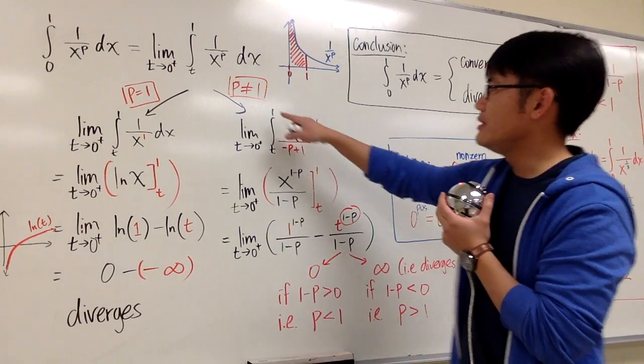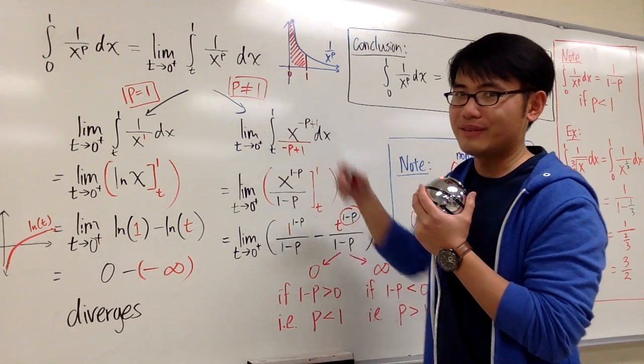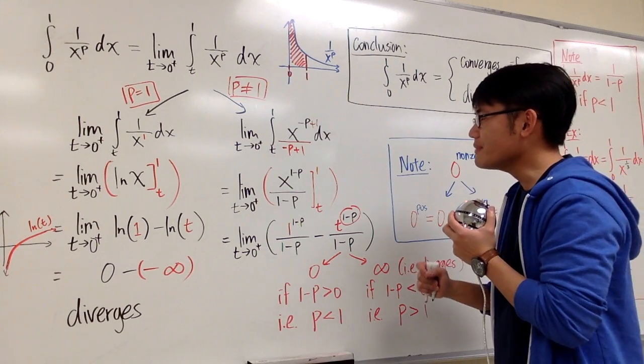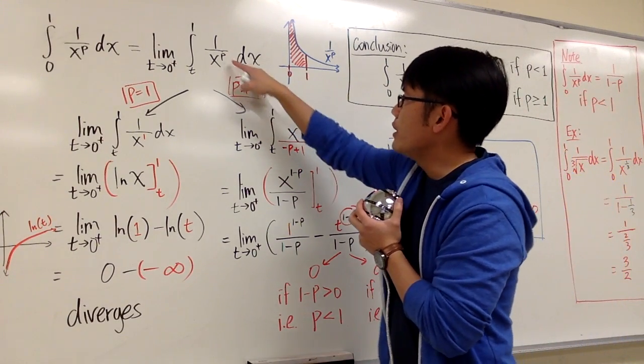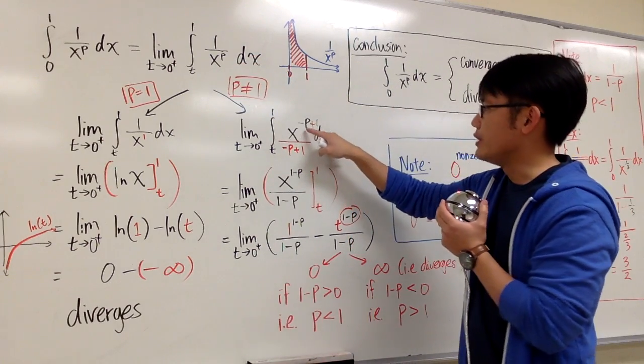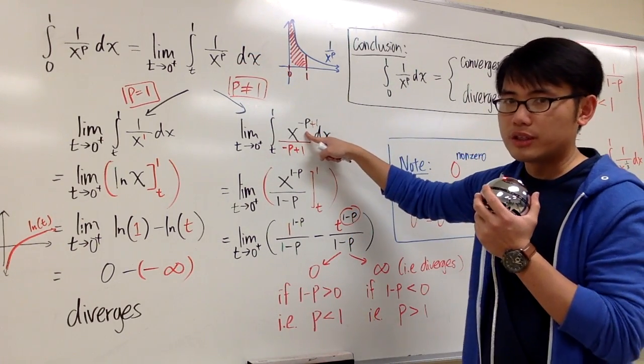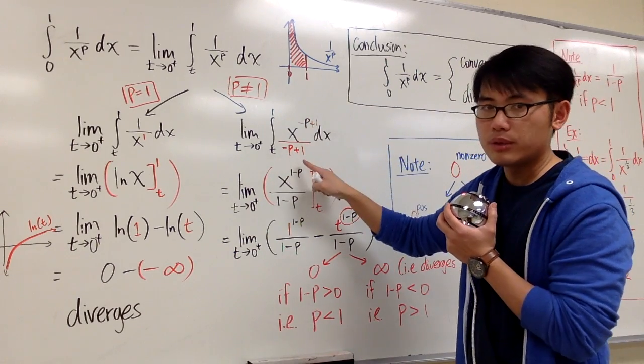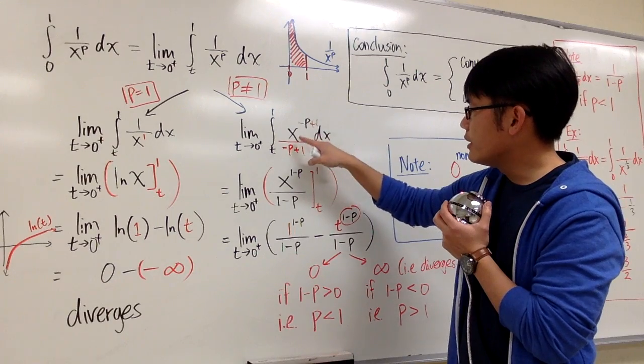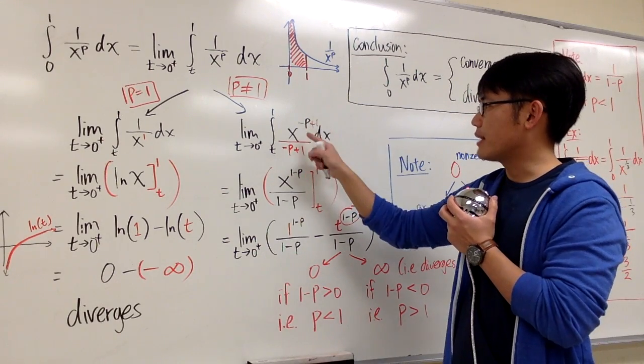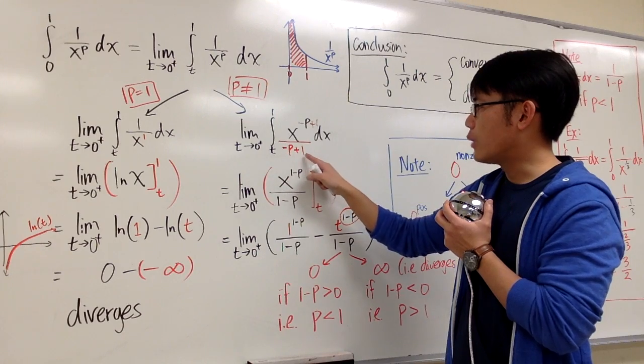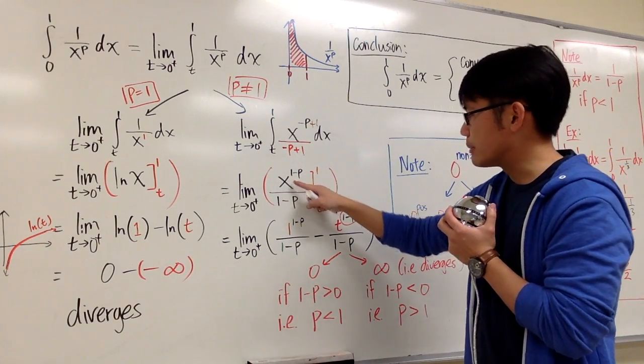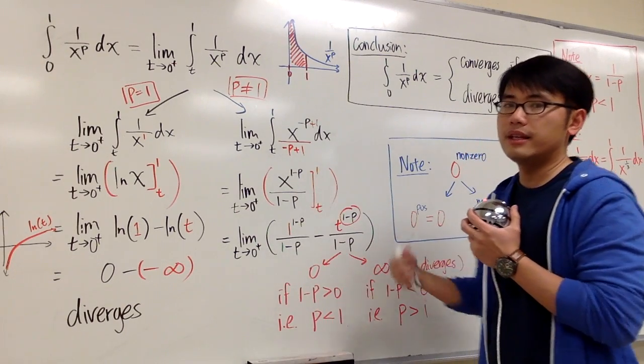Second of all, let's consider if p is not equal to 1. Hopefully we will have something better to do right here. We have the convergent situation here. If p is not equal to 1, we can look at 1 over x to the p power as x to the negative p, and we get to use the reverse power rule. Namely, we add one to the exponent, and this is the new exponent, so we divide it by the new exponent. Let me write this as 1 minus p on top and 1 minus p on the bottom. I will plug in 1 into x and subtract plug in t into x. That's just the anti-derivative part.